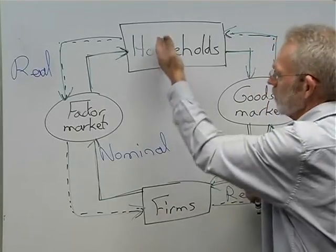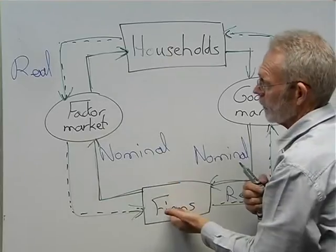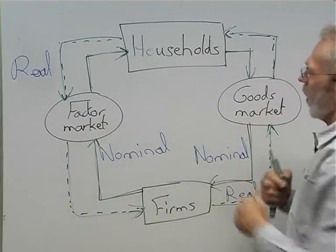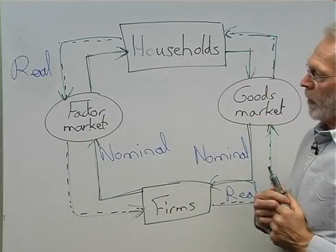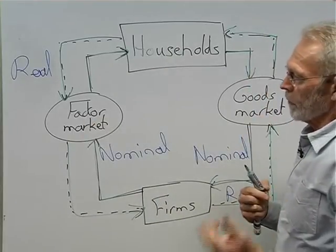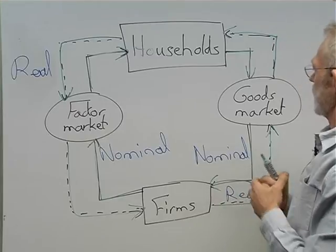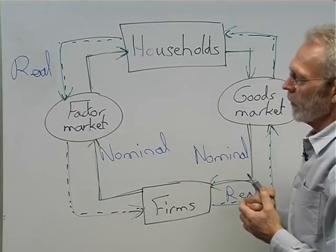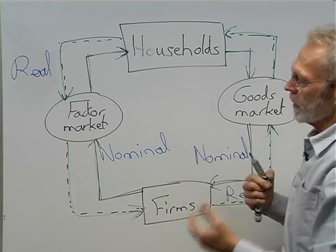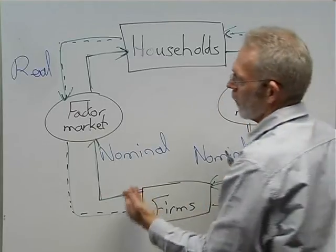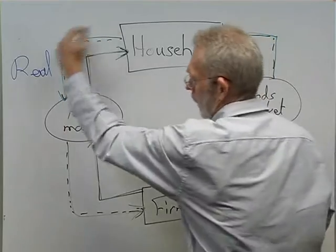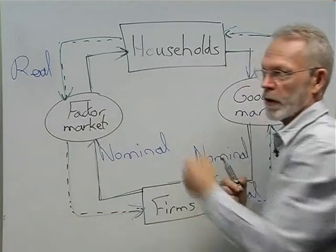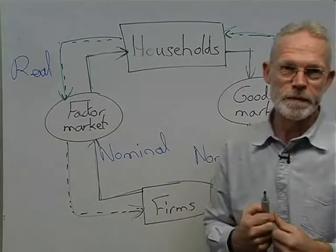So the interaction between households and firms, taking place on the market for factors — the factor market — and the goods market, resulted in a real flow and also in a nominal flow.